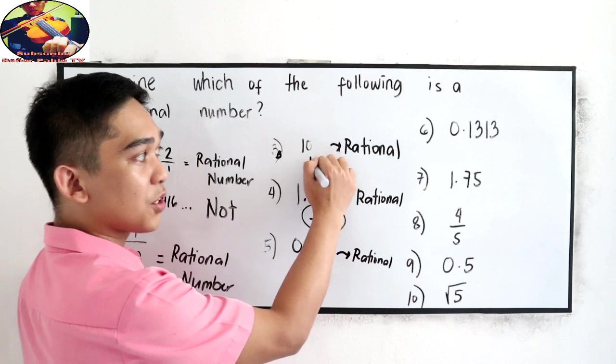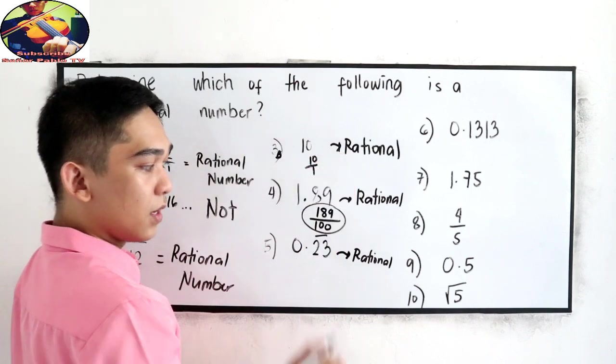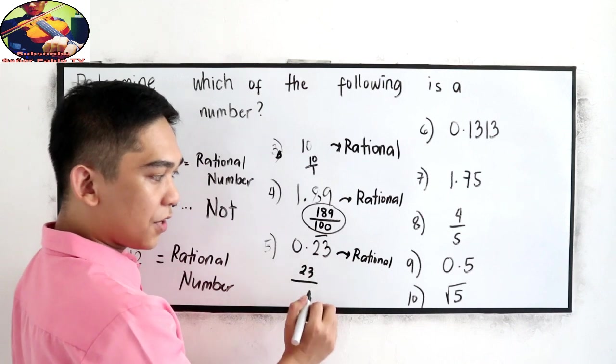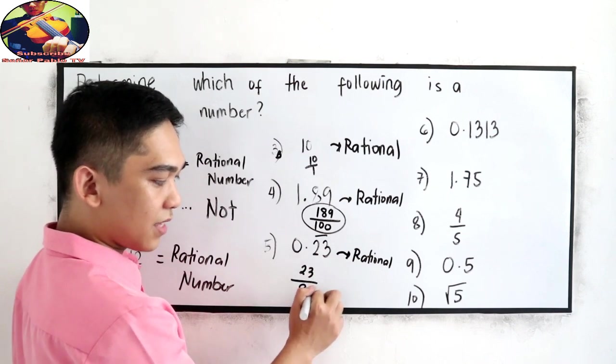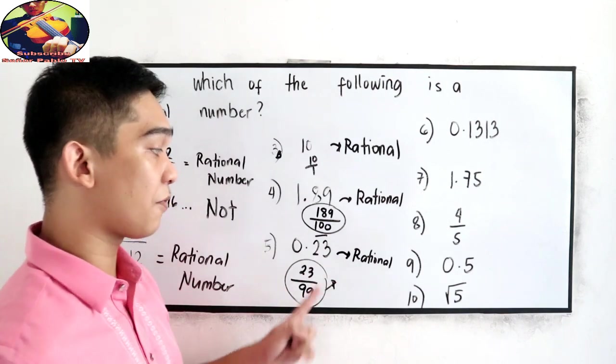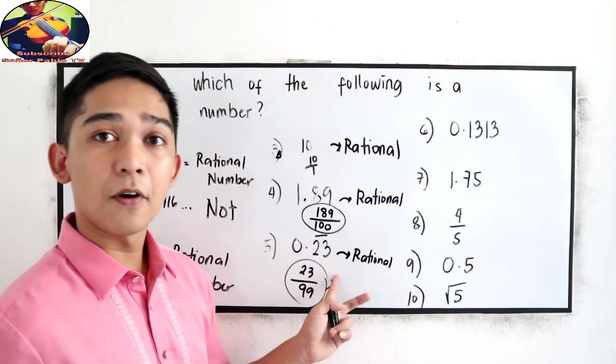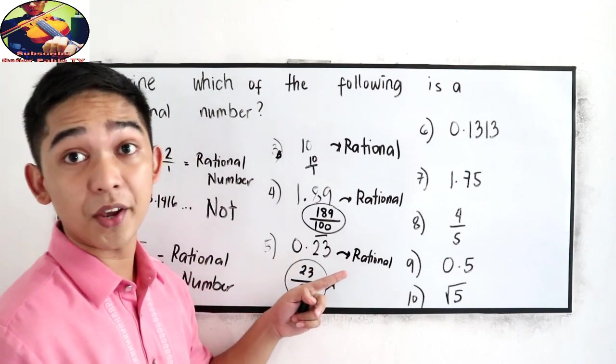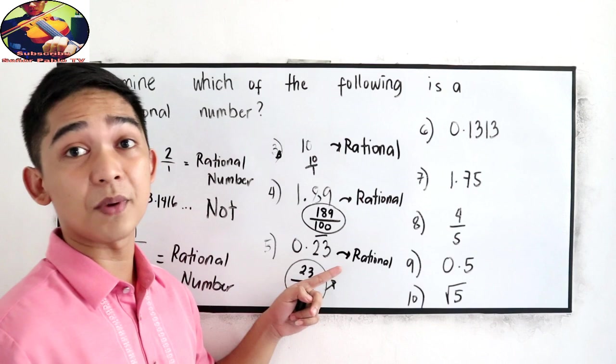For number 3, the rational form is 10 over 1. And in this case, 23 over 99. This is the rational form. We're going to talk on how to simplify this kind of decimal in our next videos. Simplifying, terminating, and non-repeating decimal.